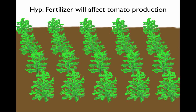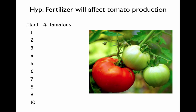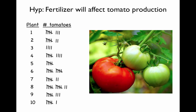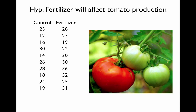Over the summer, your tomato plants grow and eventually start to produce tomatoes. As you're harvesting, you keep track of how many tomatoes came from each plant. Your data sheet has plants numbered on the left, and you keep a running tally of how many tomatoes you're picking from each plant. At the end of the summer, after all the plants have quit producing tomatoes, you're ready to evaluate whether fertilizer had an effect. Here are our final data: the first column shows all the plants in the control treatment that did not get fertilized, each number representing tomatoes produced by an individual plant, and the same for the fertilized plants with 10 plants each.